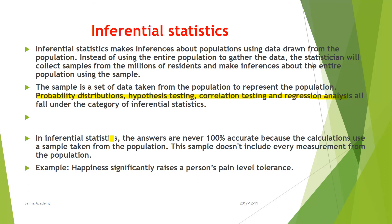In inferential statistics the answers are never 100% accurate. Why? Because calculations are based on a sample taken from the population, and that sample does not include every measurement from the population. For example, the claim that happiness significantly raises a person's pain tolerance level is an example of inferential statistics.